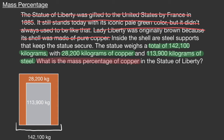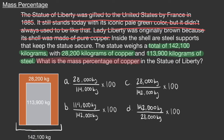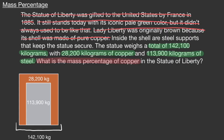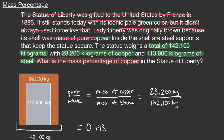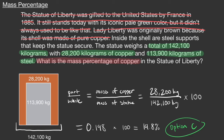We want to calculate the mass percentage of copper in the Statue of Liberty. Pause the video and decide which option is the correct way to calculate the percent of copper. Percent composition is a ratio of the part to the whole. Put the mass of the part — in this case the mass of the copper — over the whole, which is the mass of everything combined, then multiply by 100 to convert from decimal to percent form. This turns out to be about 19.8%.